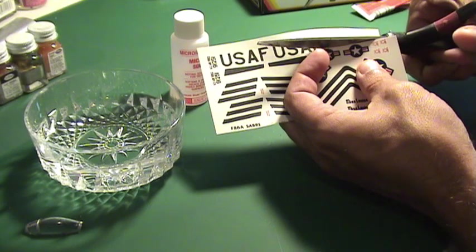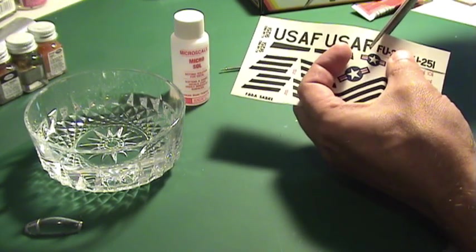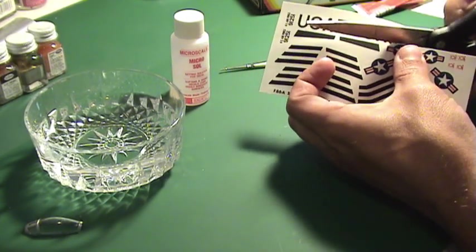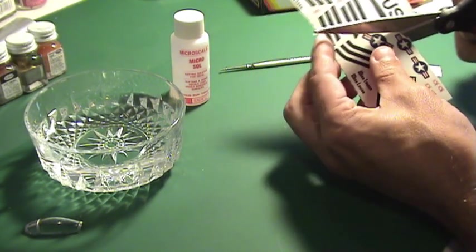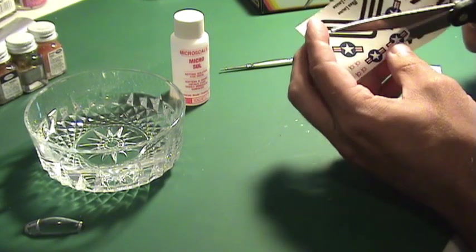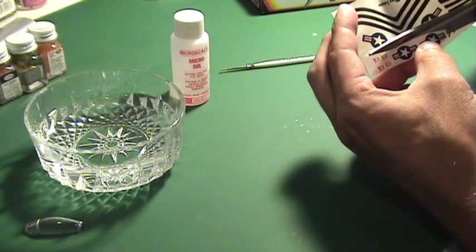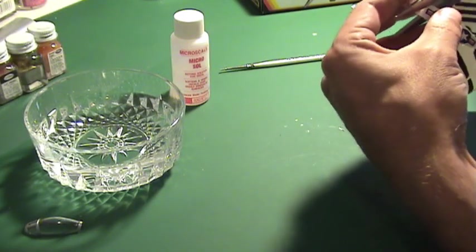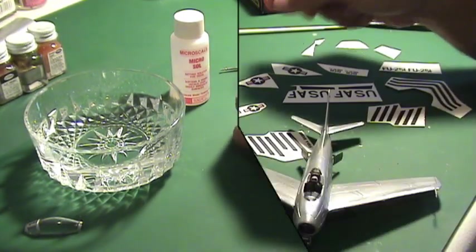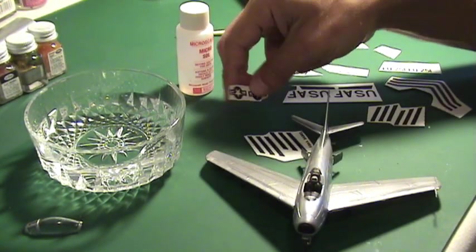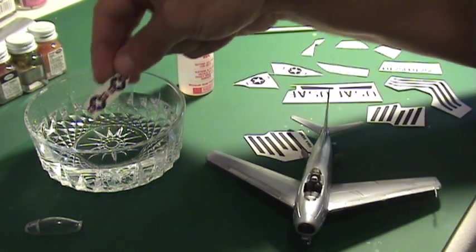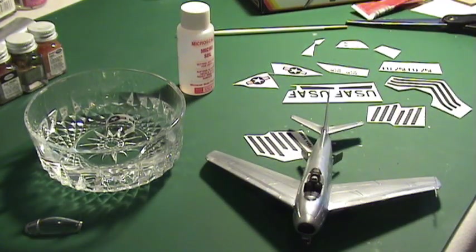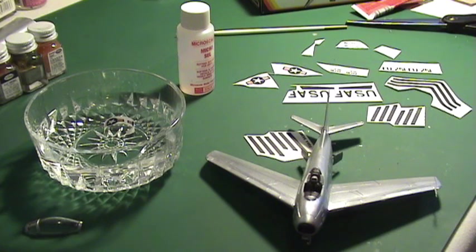Most decals are water-activated. They are very fragile and very easy to damage, especially if you do not handle them carefully. Dip the decal in water for about 15 to 25 seconds. This time will be in most cases enough to let the adhesive release from the backing paper.